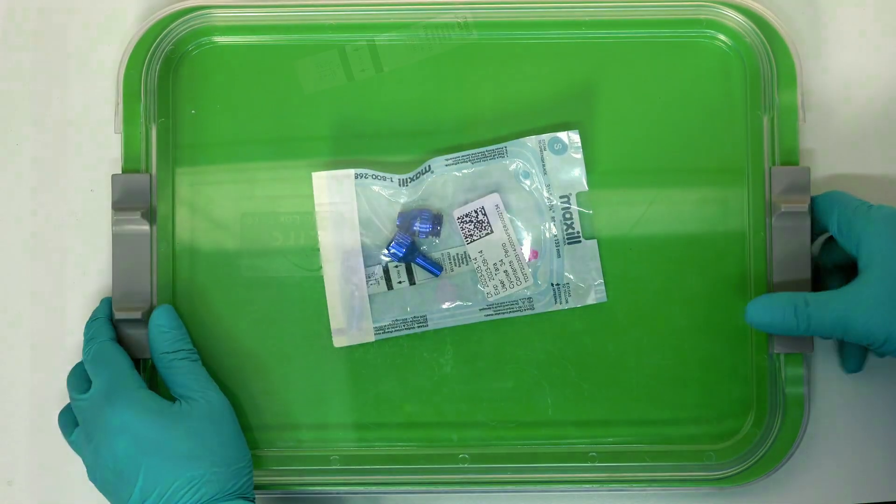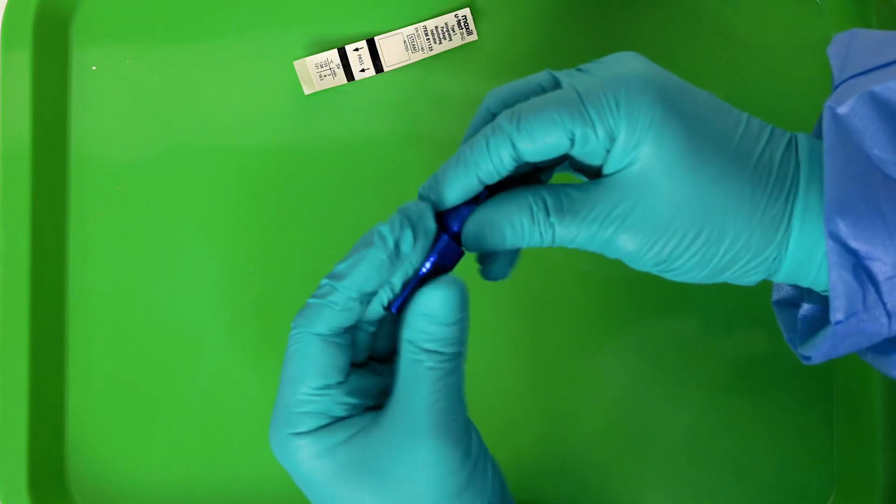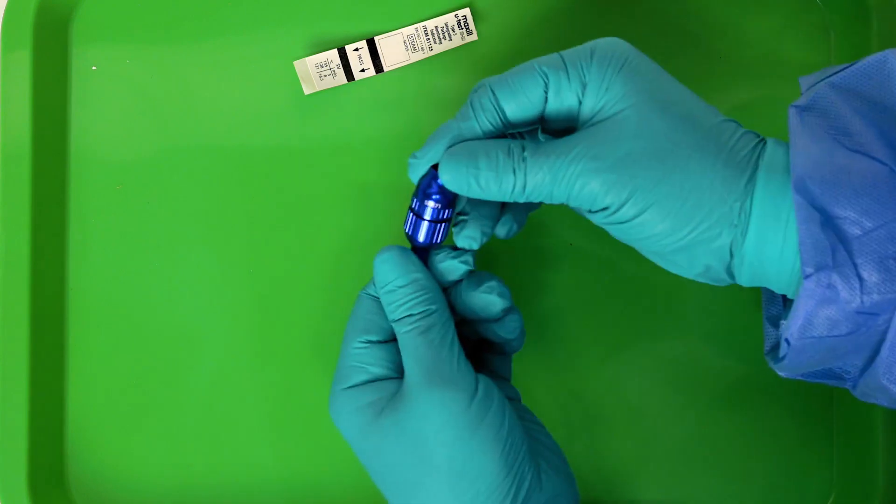Then, after sterilizing, reposition the diaphragm and reassemble all three parts. That's it! The valve is now sterilized and ready to be used again.